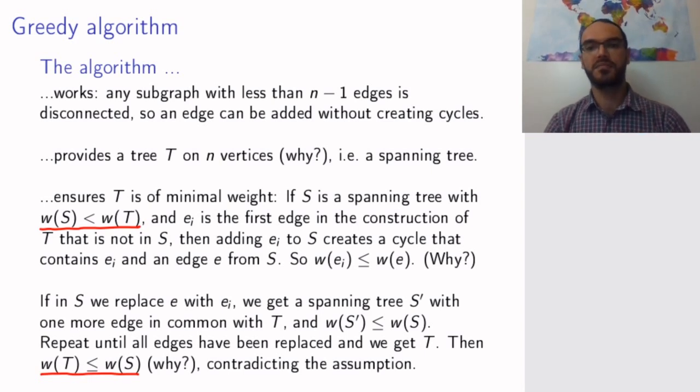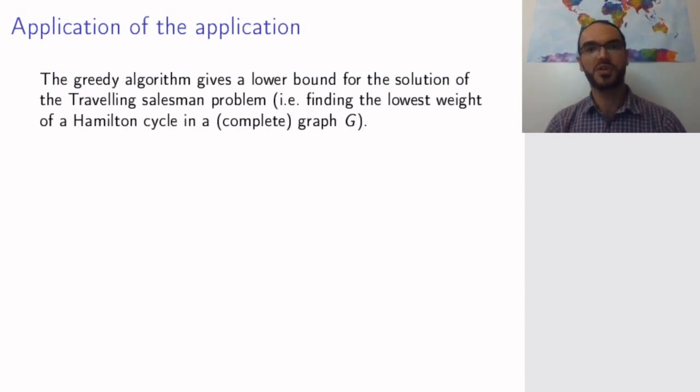This is an algorithm that is useful in itself. But also, you can apply this application to another previous application we had in this course, namely the traveling salesman problem. The traveling salesman problem is the problem where you had a graph, maybe a complete graph, and you want to find a Hamilton cycle with the lowest possible weight. So not a spanning tree, but a Hamilton cycle. There is a way not to solve the traveling salesman problem using the greedy algorithm, but to get a lower bound on how cheap you can get away with your Hamilton cycle in G.